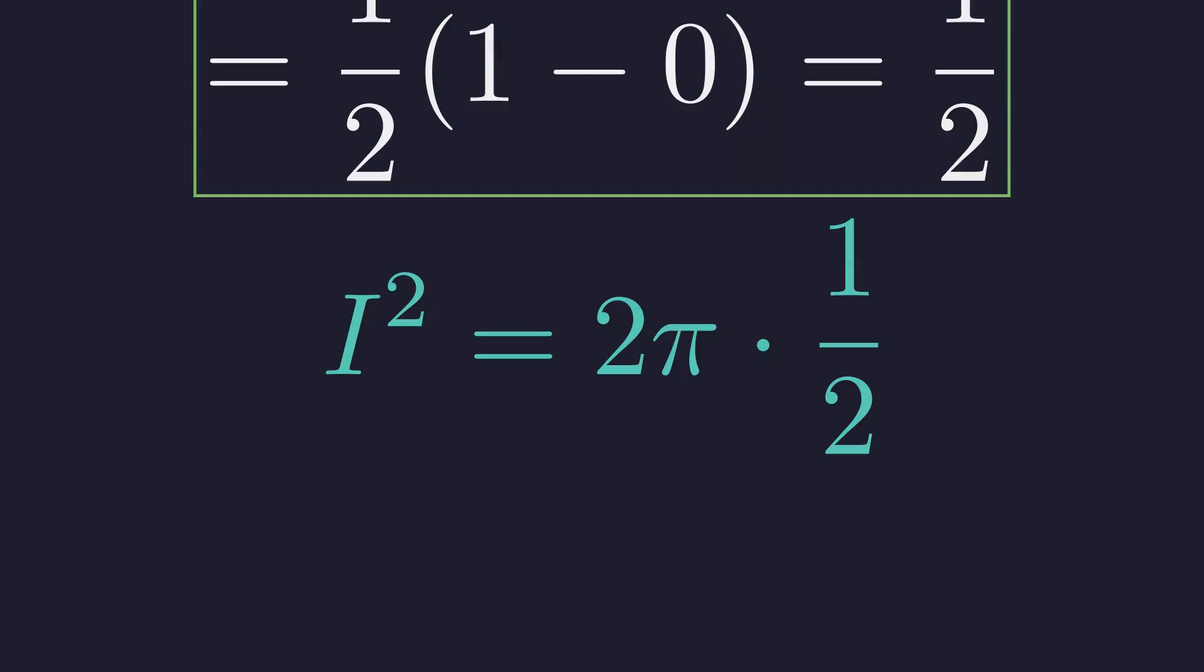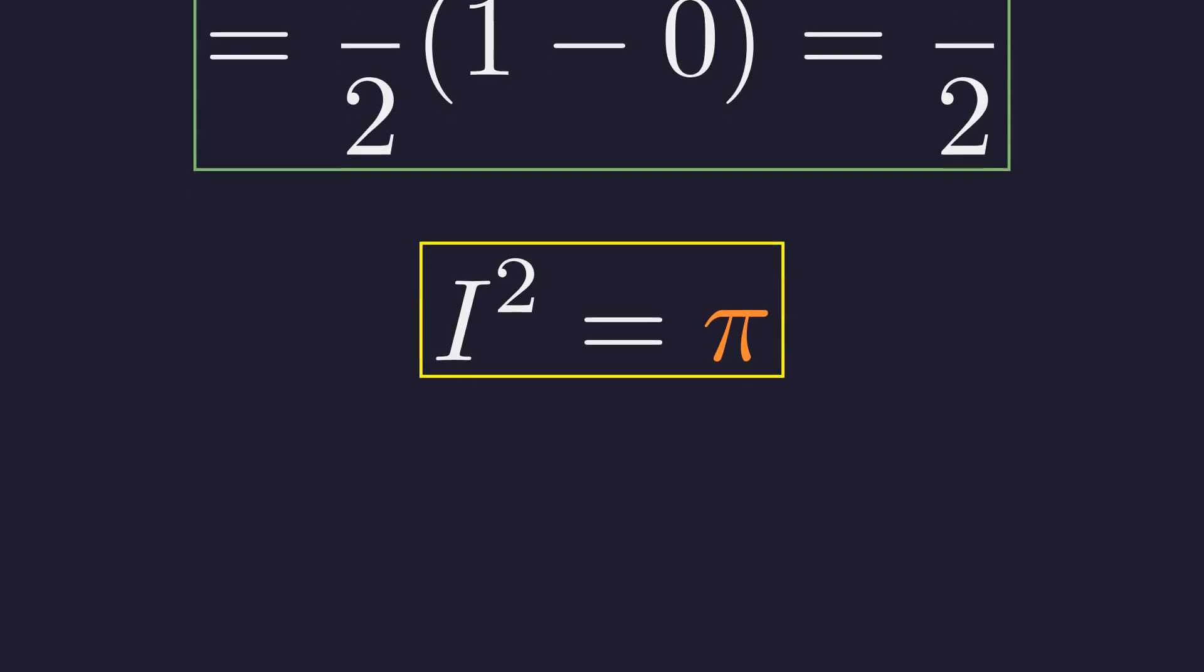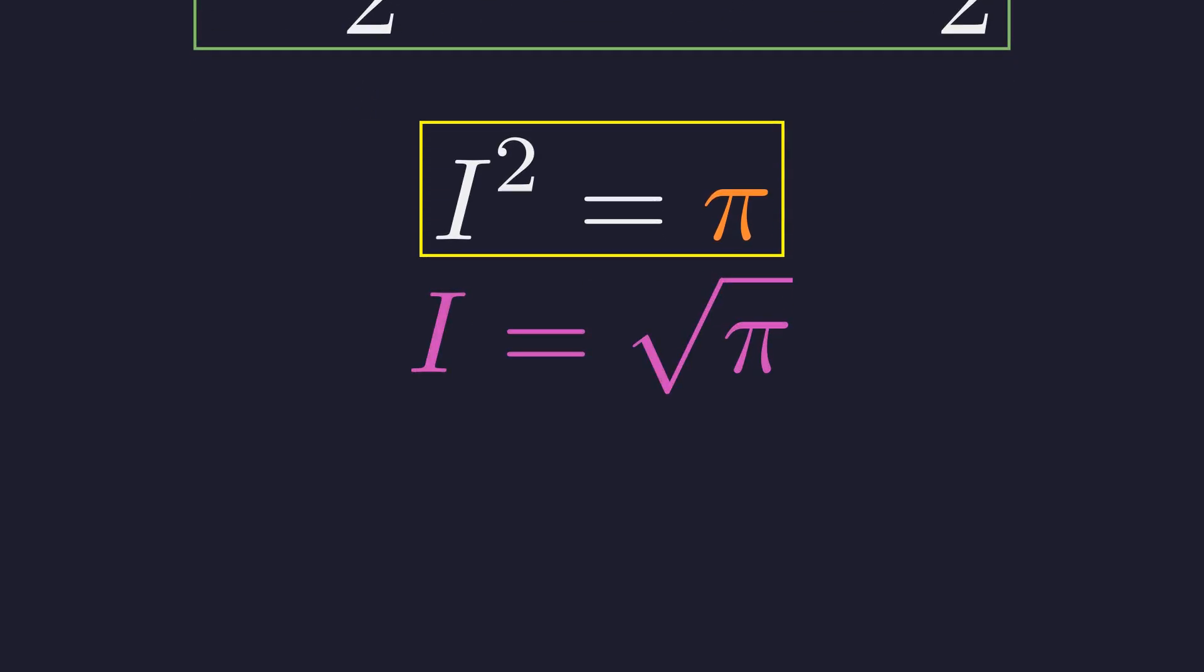Now we multiply our results. i squared equals 2 pi times 1 half, which simplifies to pi. But remember, we want i, not i squared. So we take the square root. Taking the square root, we get i equals the square root of pi.